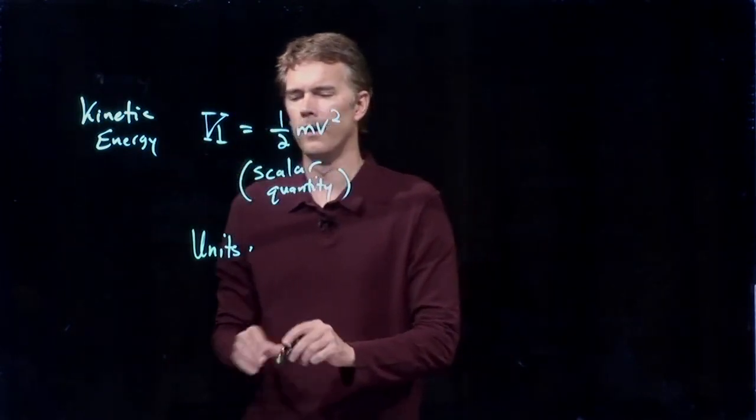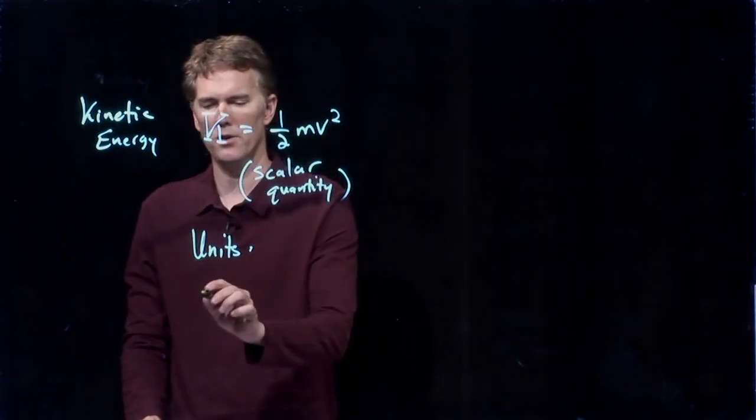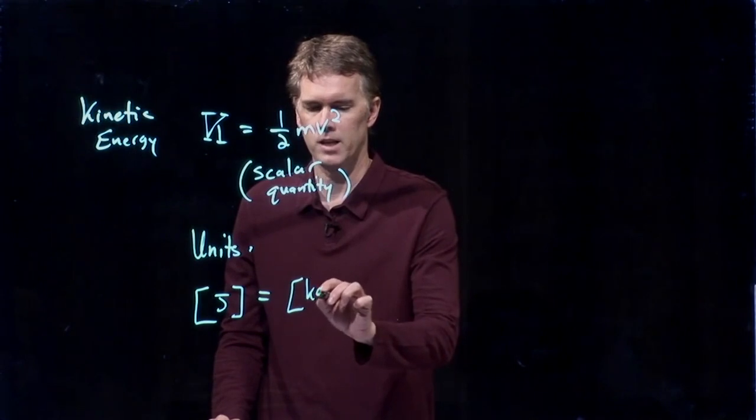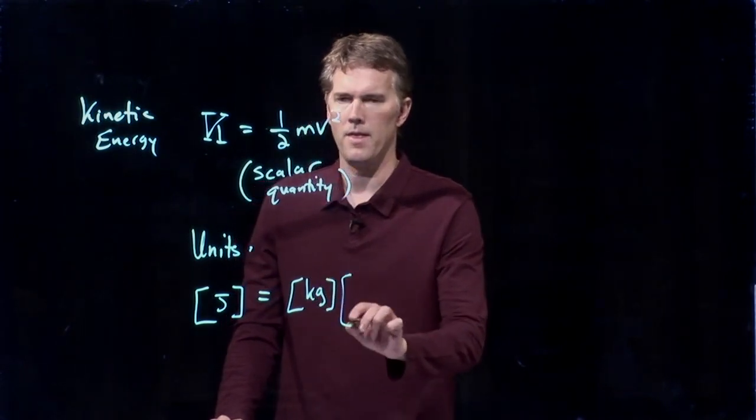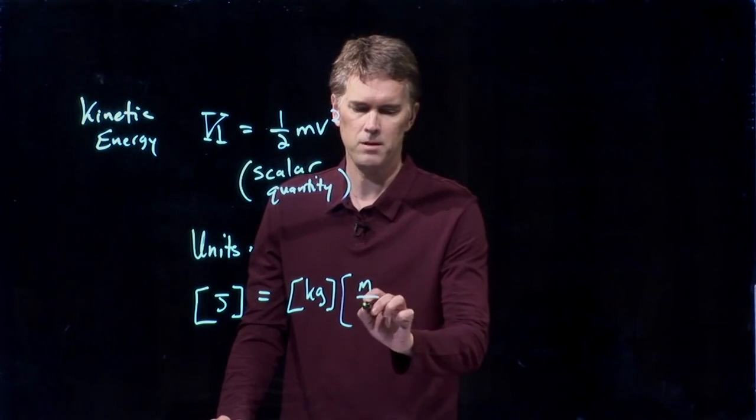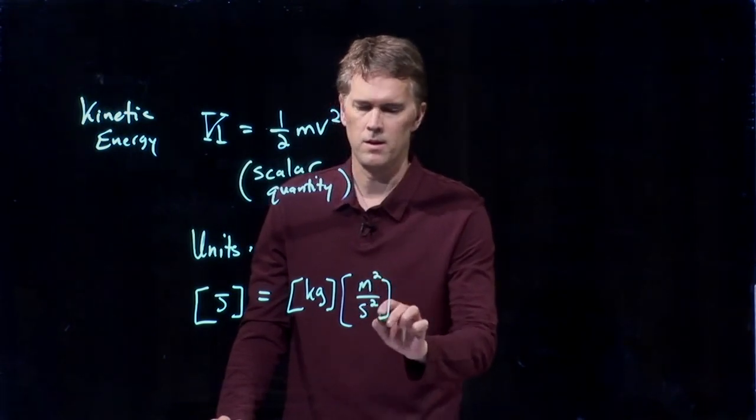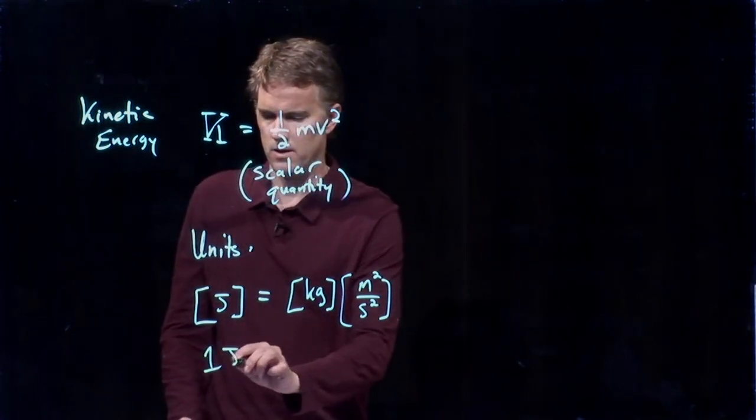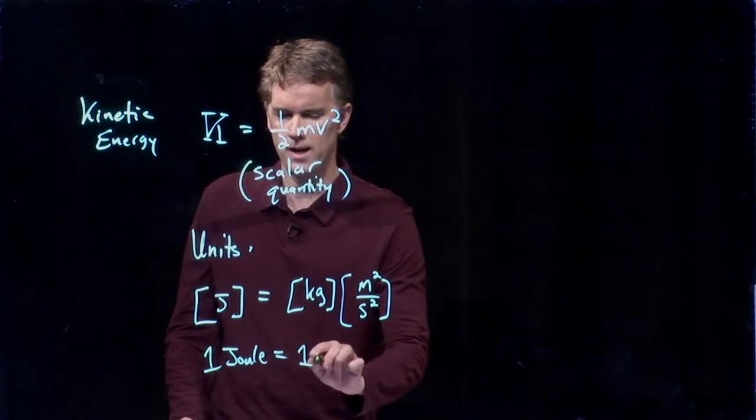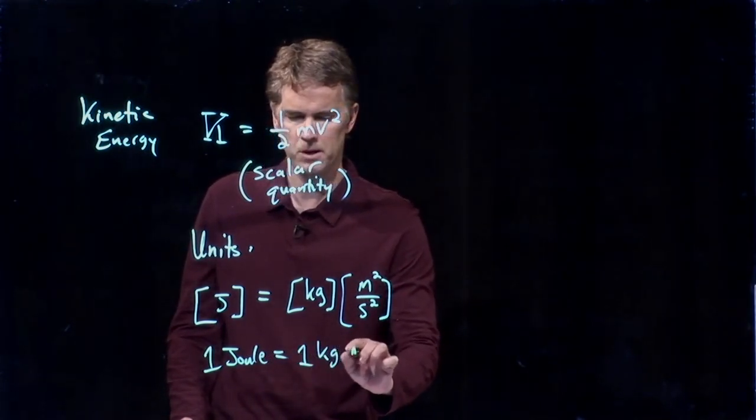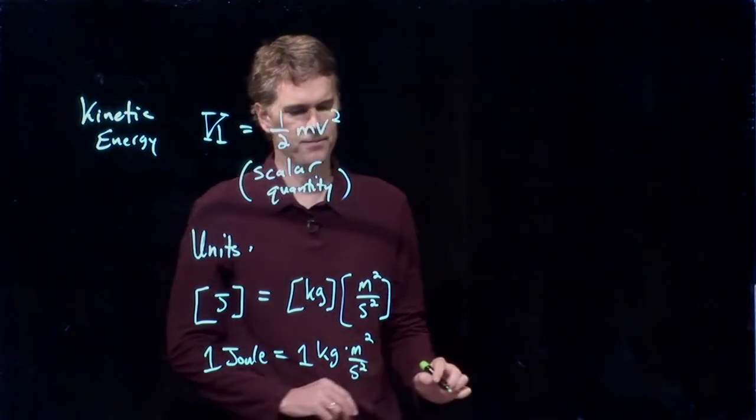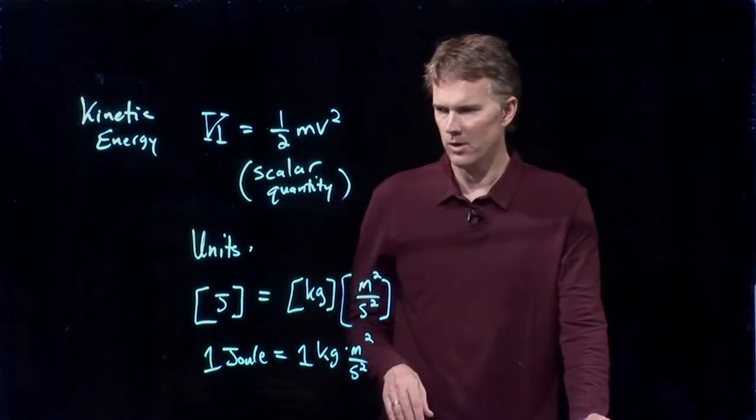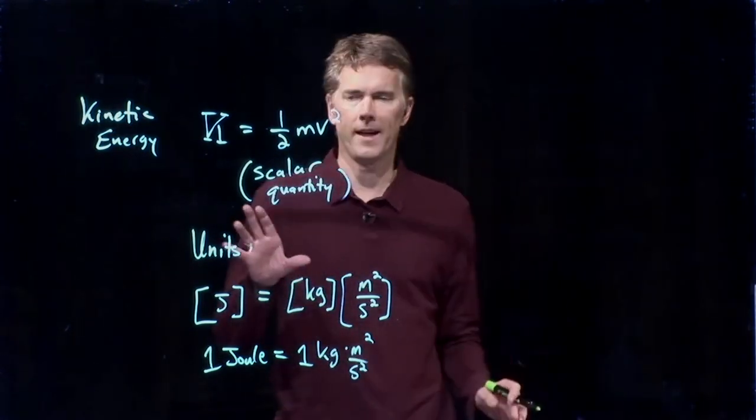And the units are joules. So let's take a look at this. We have kinetic energy. On the right, we have units of kilogram. And then V is meters per second, but we're going to square it. And so this is what a joule is. One joule is equal to one kilogram meter squared per second squared. And that's the units of energy, the SI units of energy that we're going to use in this class, joules. So that's kinetic energy.